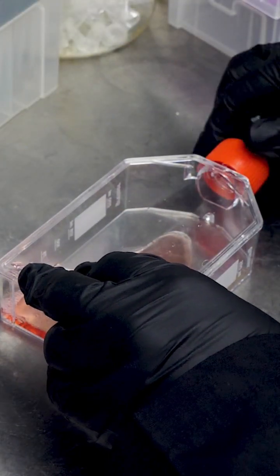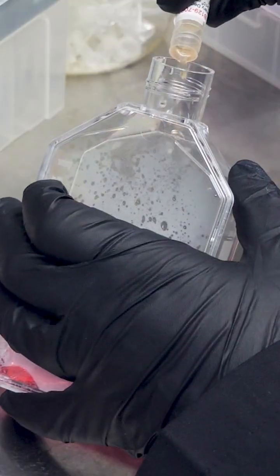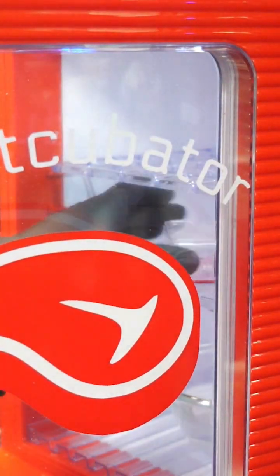The cells we got from a supplier online come frozen on dry ice, so we quickly thaw them and dump them in. Then we stick the flask into the meatcubator.